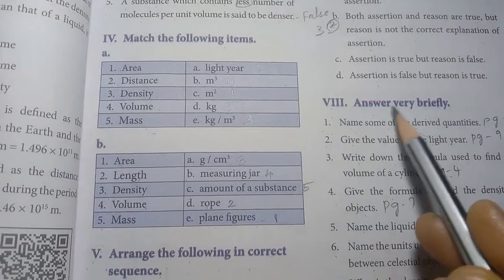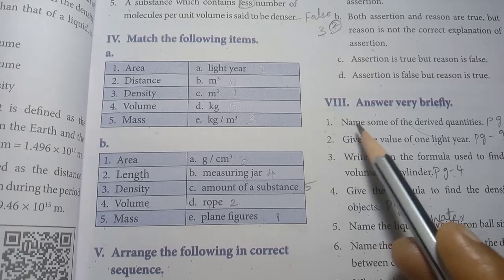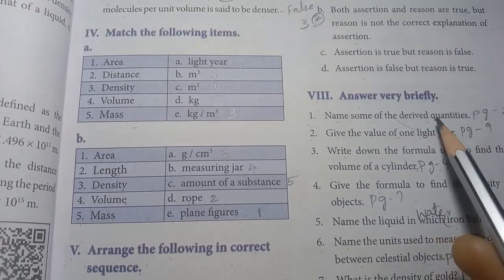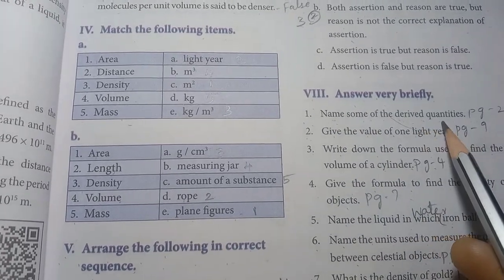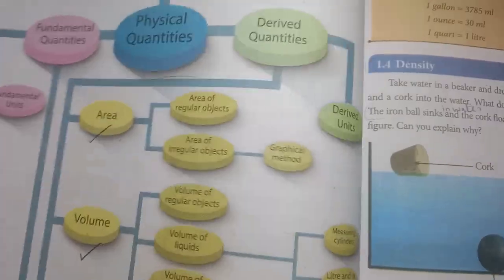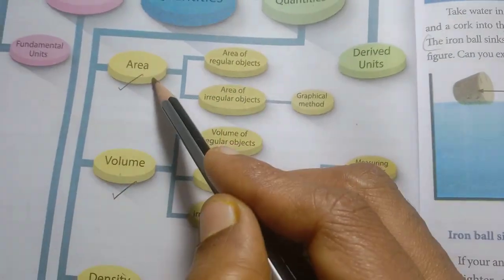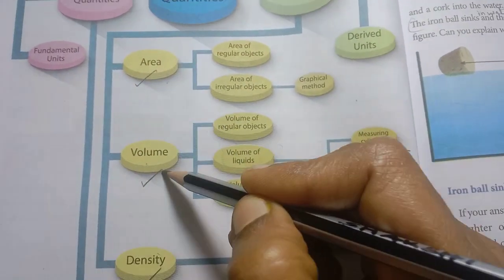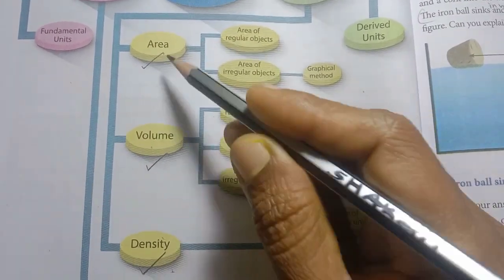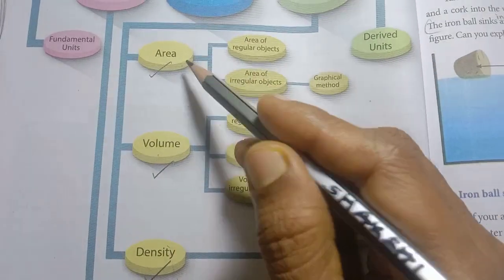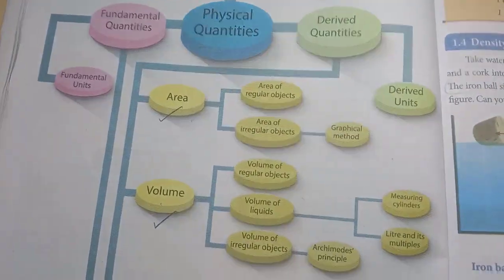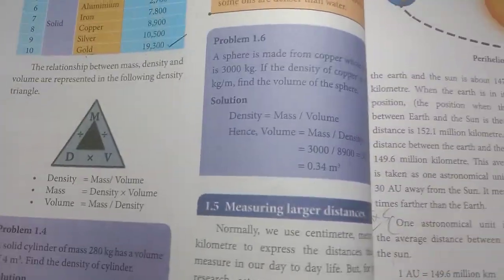Roman numeral 8, answer very briefly. First one: name some of the derived quantities. The derived quantities are area, volume, and density. These are the derived quantities.